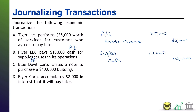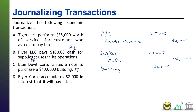Transaction C: Blue Devil Corp writes a note to purchase a $400,000 building. We are buying a building — that's an asset going up, and when assets go up, that's a debit. So we debit building, $400,000. We need the credit. Since we didn't pay cash — we wrote a note — we now have a note payable, abbreviated NP. Liabilities going up is a credit. So: debit building, credit note payable, $400,000.